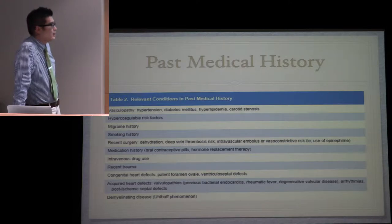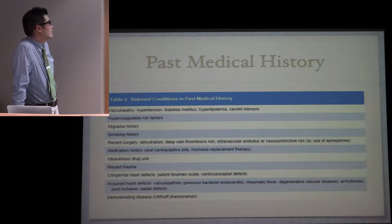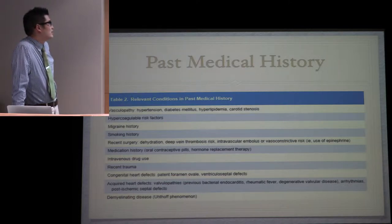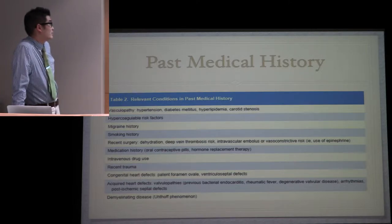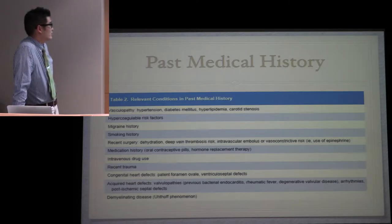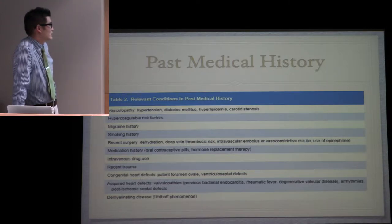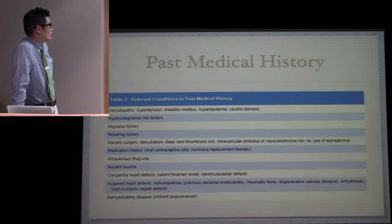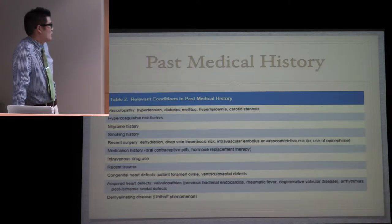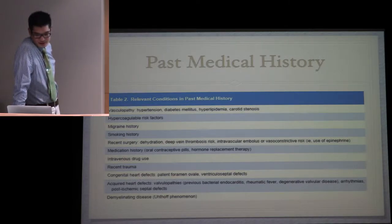Pertinent points from the past medical history: ask about vasculopathic risk factors - hypertension, diabetes, hyperlipidemia, carotid stenosis. Hypercoagulable risk factors, their migraine history, smoking history - there's increased risk for clots. Recent surgery, medication history, particularly oral contraceptive pills or hormone replacement therapy which makes them more coagulopathic. IV drug use, recent trauma, any congenital or acquired heart defects, as well as demyelinating diseases.